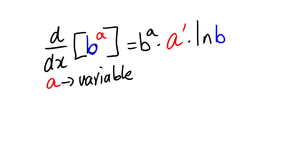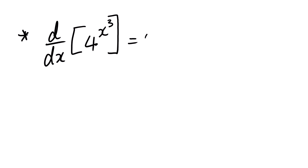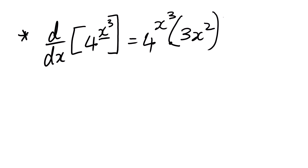Our next type of derivative is a base raised to the power a, where a is a variable — it might be x, y, or any variable. The derivative of this function is: take the base to the power as it is, multiply by the derivative of the exponent, then multiply by ln of the base. For example, the derivative of 4 to the power x³ is 4 to the power x³, multiplied by 3x², multiplied by ln 4.